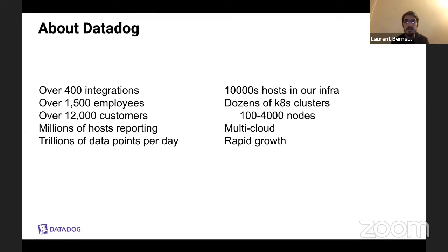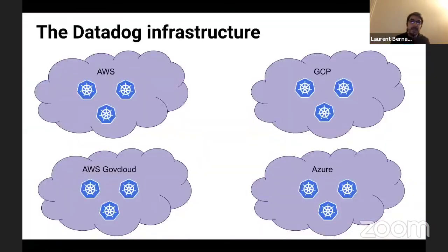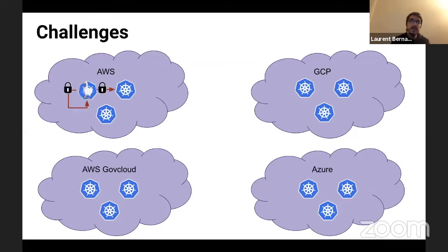We also run on multiple clouds, which makes things even more challenging. I'm going to talk about how we use eBPF in our infrastructure today. Here is a very simplified diagram of our infrastructure. You can see that we run multiple Kubernetes clusters on multiple cloud providers, and this comes with quite a few challenges. The first one is, since we run multiple clusters, we need to make sure that we can address communications between clusters.